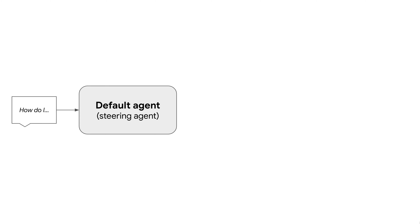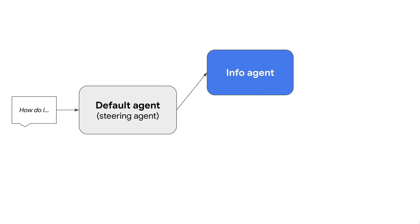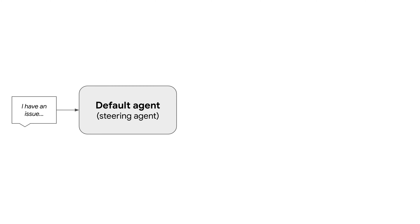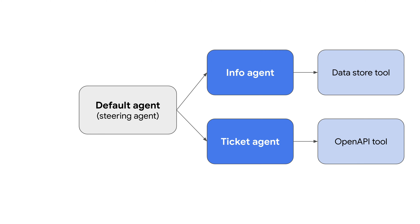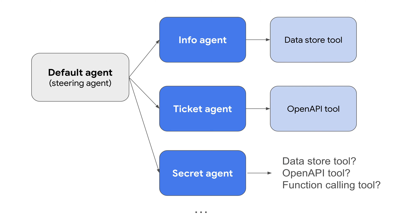What we're going to build is a multi-agent system where the default agent will determine if the user is looking for information, in which case it will route the request to an info agent which has access to a data store tool, or if the user is experiencing an issue, it will route the request to a ticket agent which has access to an OpenAPI tool. In short, we have three agents, but you could easily extend this with additional agents, each having access to different types of tools — you can create data store, OpenAPI, or function calling tools.